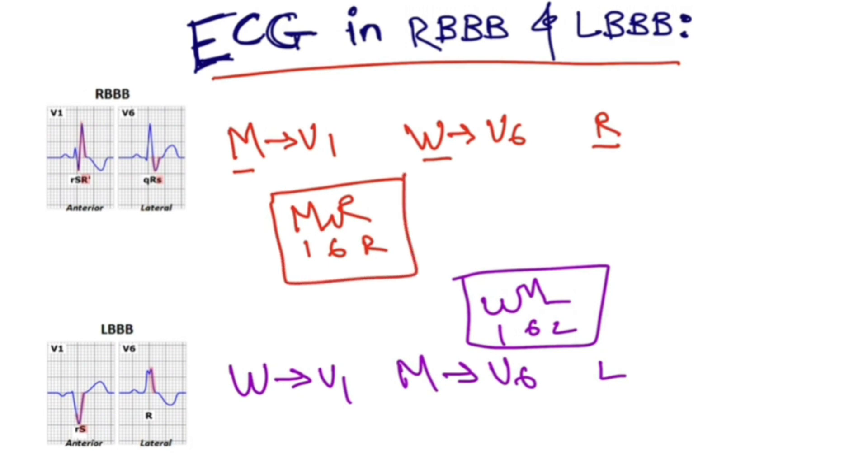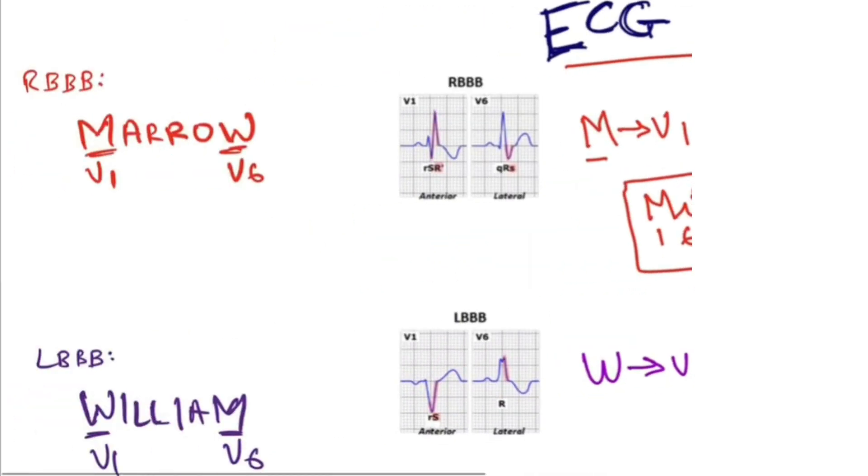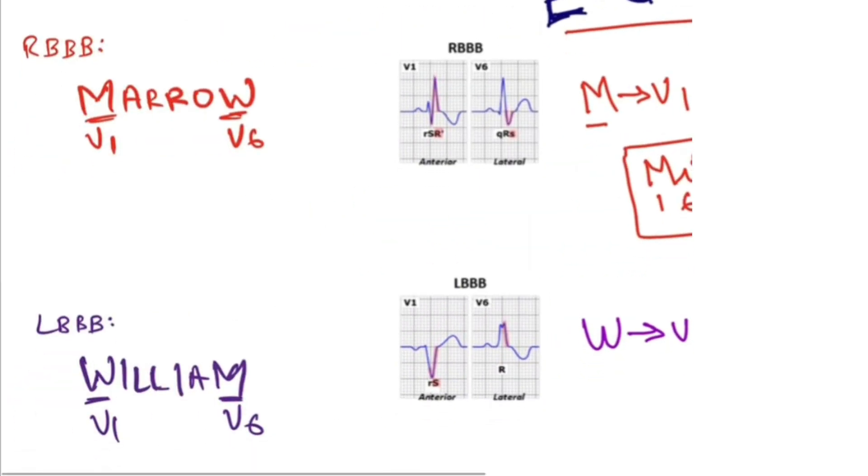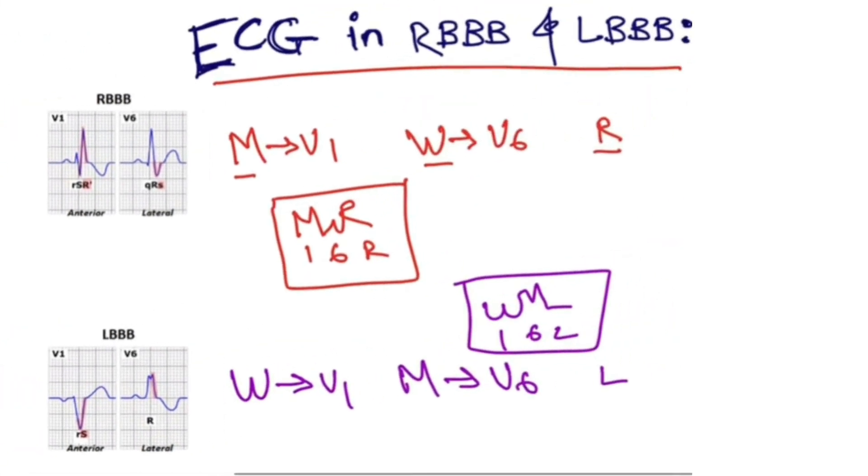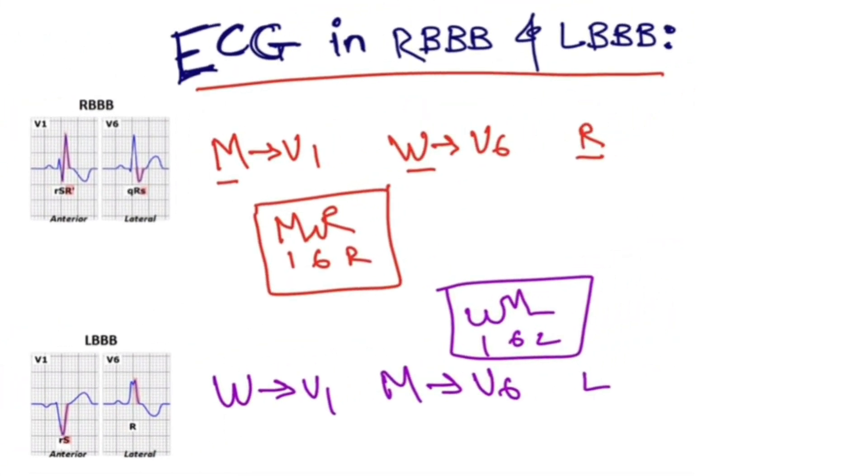this is the easiest trick I made. Previously you might have come across Marrow and William mnemonic for right and left bundle branch block respectively. This is also a good mnemonic but I made this mnemonic which I thought is easier.